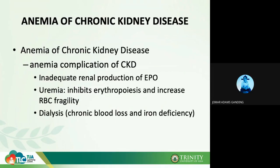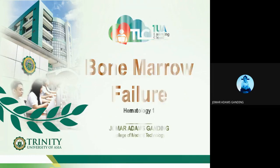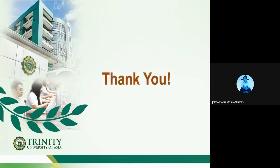In this discussion we covered bone marrow failure including aplastic anemia — both acquired and inherited forms — as well as other forms of bone marrow failure such as Diamond-Blackfan anemia, congenital dyserythropoietic anemia, myelophthisic anemia, and anemia of chronic kidney disease. This is part one of the discussion. Please proceed to the next video, and afterwards we will meet for discussion through Google Meet. Thank you so much.